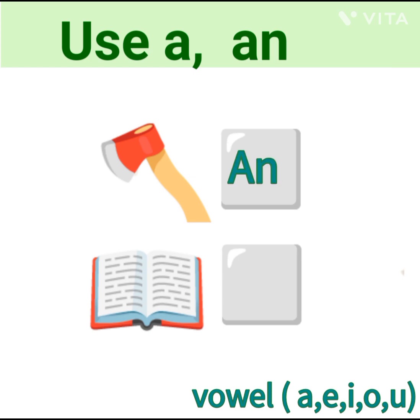Next, book. The first letter of book is B. B is consonant and single object. So we use article A.